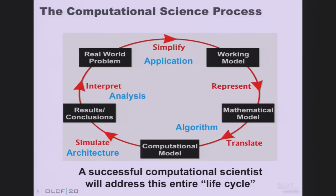A successful computational scientist is probably going to address this entire life cycle. To be successful, in my opinion, you have to at least address or have recognition of this entire process. If you look at your program of study, it's really designed to address all of this. We all have scientific and engineering classes — that's our application. We have mathematics classes — that's our algorithms. And we have computer science classes that address architecture questions.